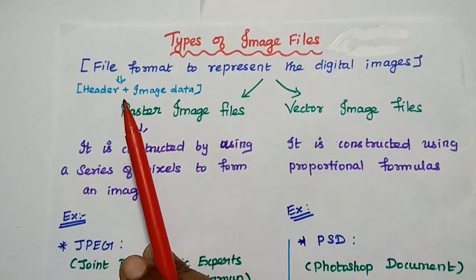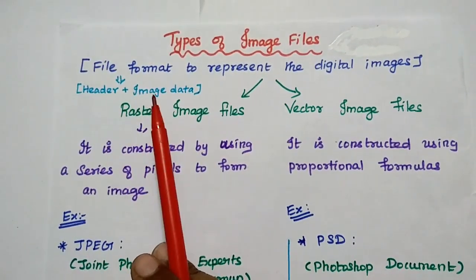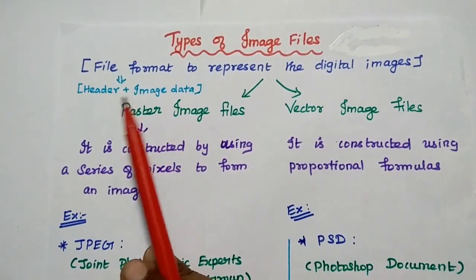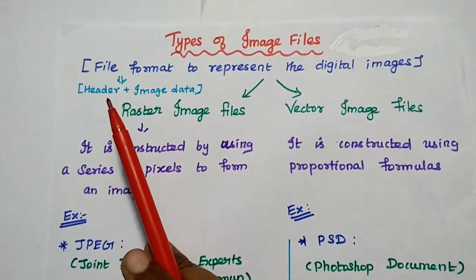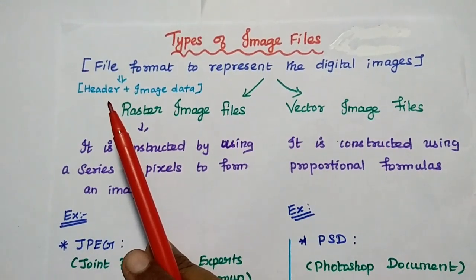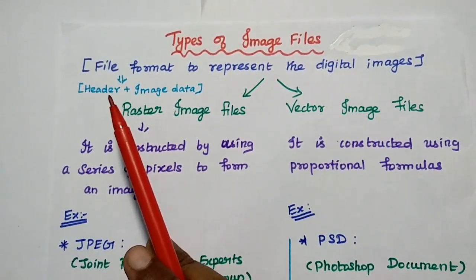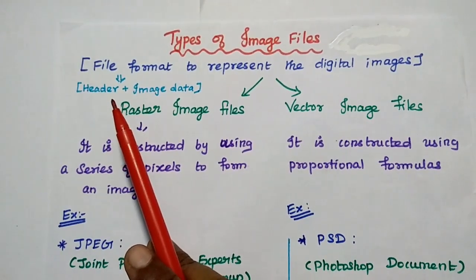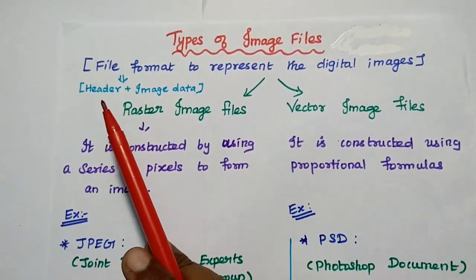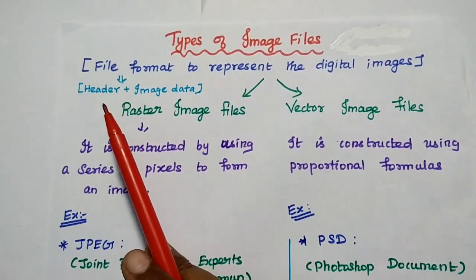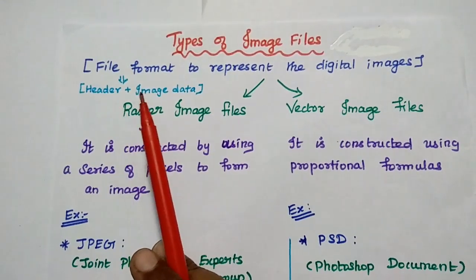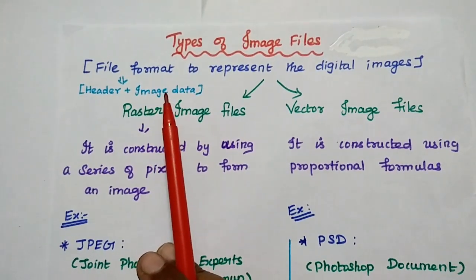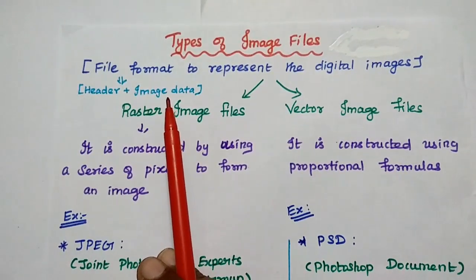This file format can have two important portions. One is header, another one is image data. In this header, we can have that information like the type of images - whether it is a grayscale image, binary image or RGB color image. Next we can have the size of the image and then the file format. The next portion is all about the image data. It contains the original image details.